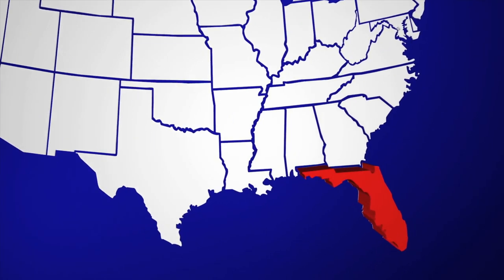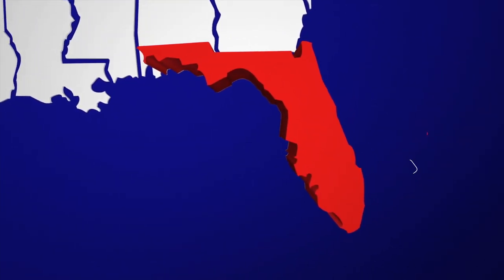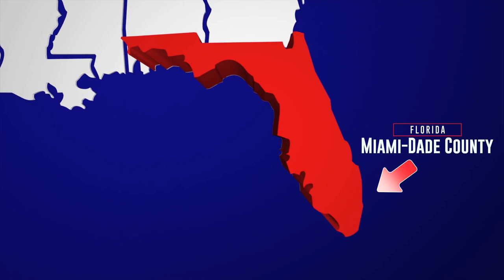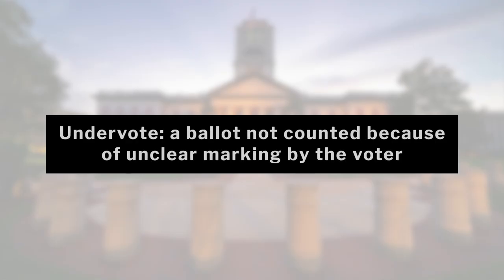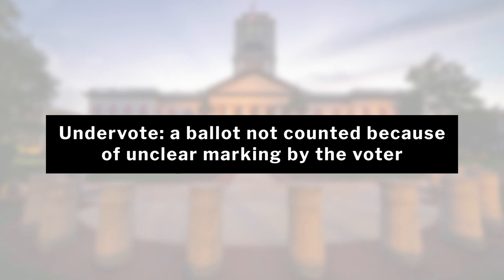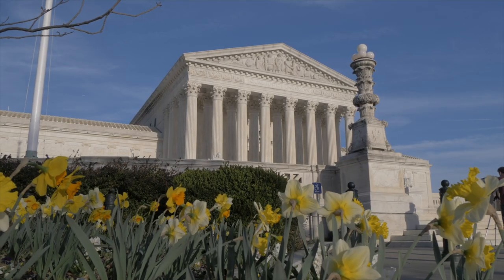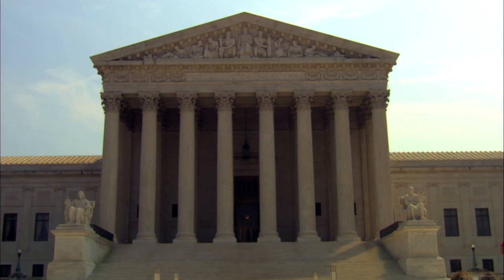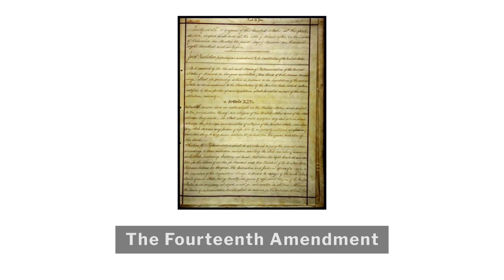Gore again challenged the results of the election in Florida and requested that the Florida Supreme Court order a manual recount of 9,000 contested votes in Miami-Dade County, as well as a statewide manual recount of undervotes. The court granted this request to Gore in a 4-3 vote and blocked Harris' certification. Bush and his legal team immediately challenged this decision by appealing to the United States Supreme Court, who halted the recount and agreed to hear the case. Bush's legal team argued that the Florida Supreme Court's ruling violated the Equal Protection Clause of the 14th Amendment.